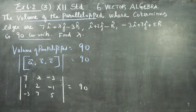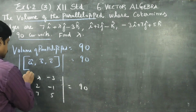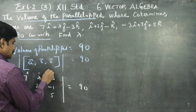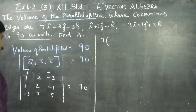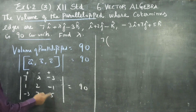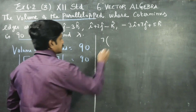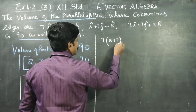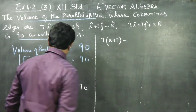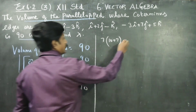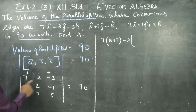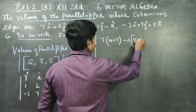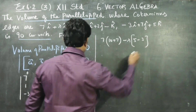Using the parallelepiped model, expanding the determinant with plus, minus, plus signs: 7 into 10, plus 7, minus lambda into (5 minus 3).